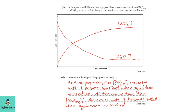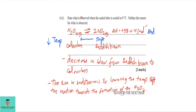Part six: account for the shape of the graph. As time progresses, the NO2 concentration increases until it becomes constant when equilibrium is reached. At the same time, the N2O4 concentration decreases until it also becomes constant when equilibrium is reached.